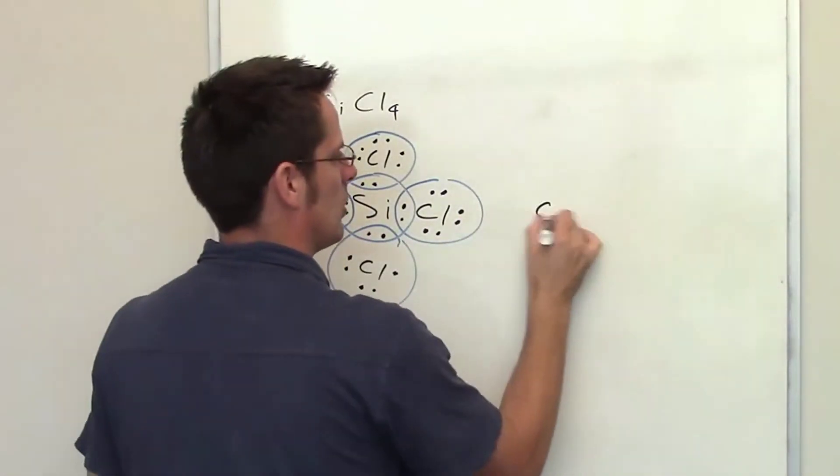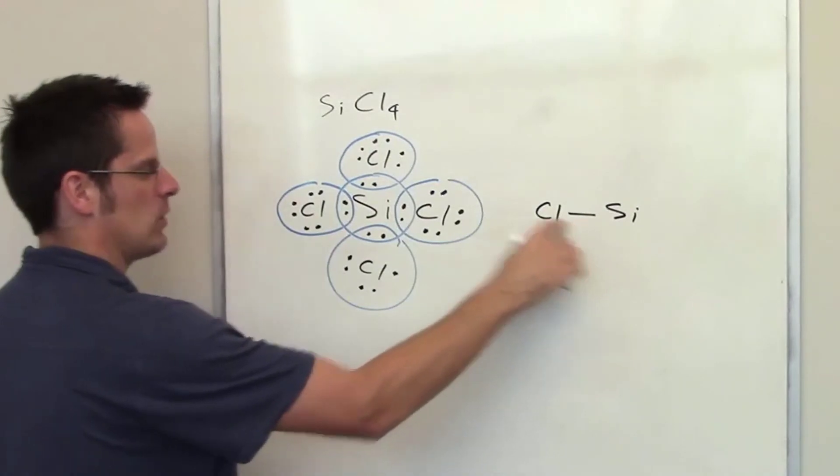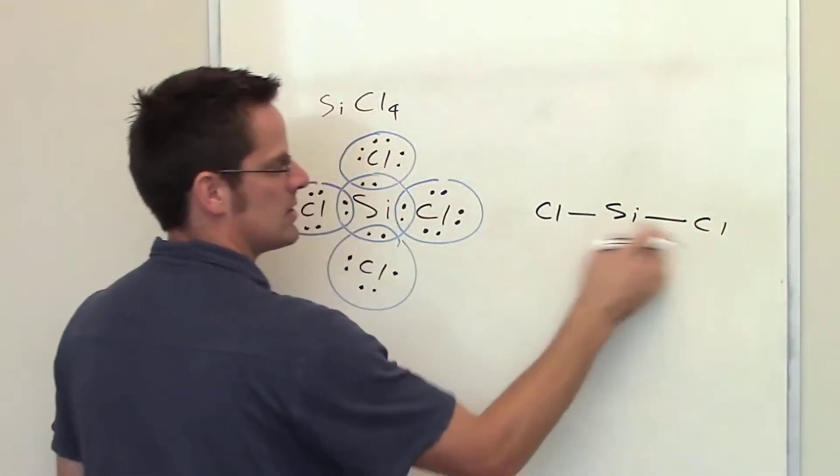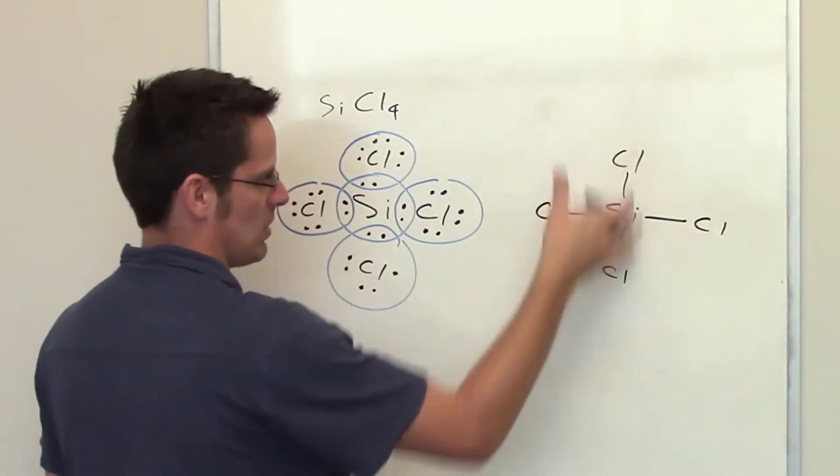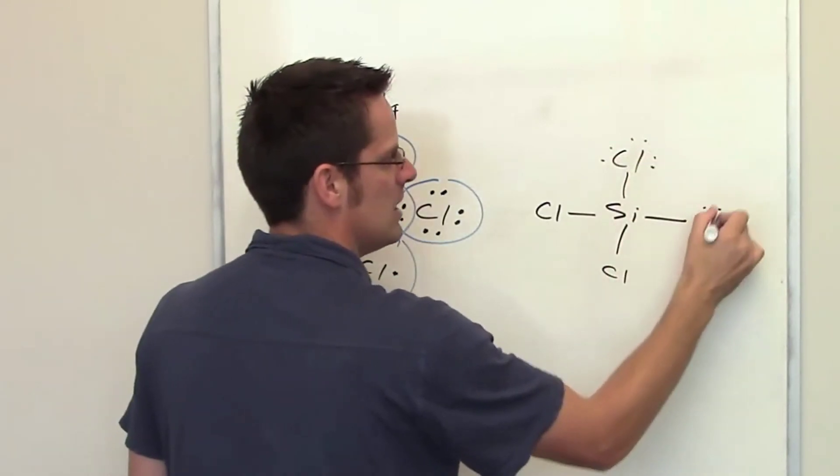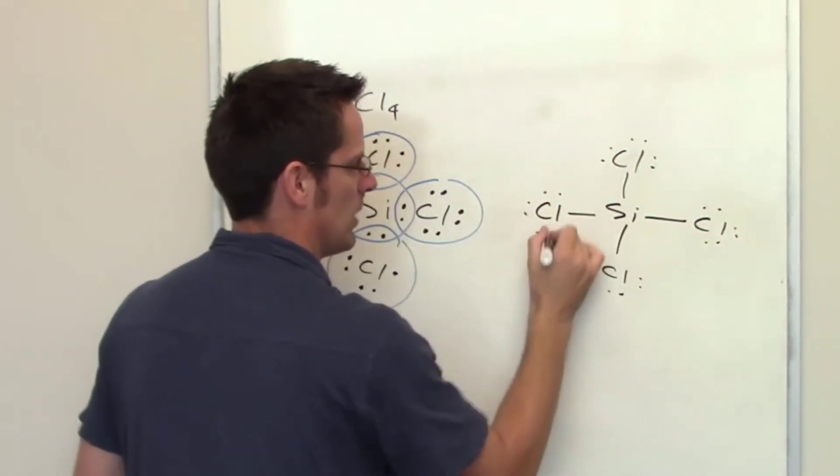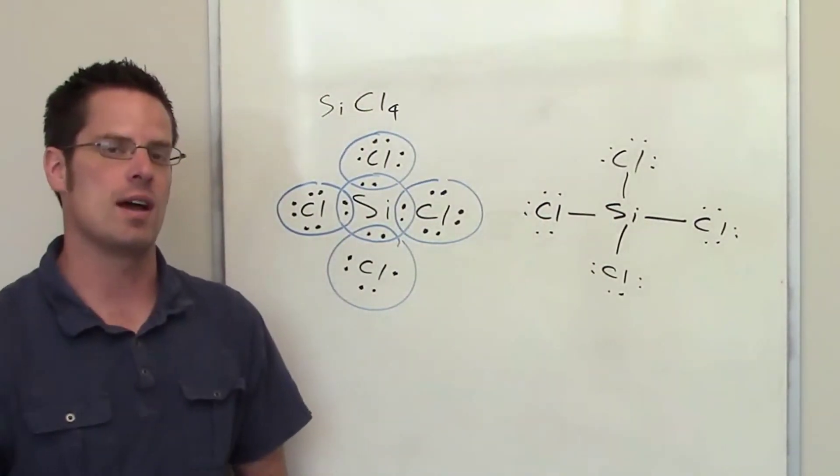So we've got our chlorine atoms, straight line here to the silicon, that straight line represents these two electrons, straight line between the silicon and the chlorine to the right, between the silicon and the one up top, the one down bottom, and then I draw the remaining lone pair electrons on each of these individual chlorine atoms. That is the Lewis structure for silicon tetrachloride.